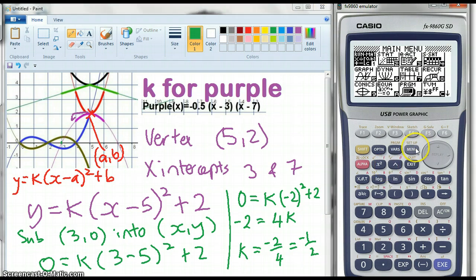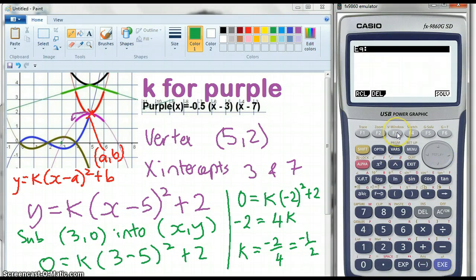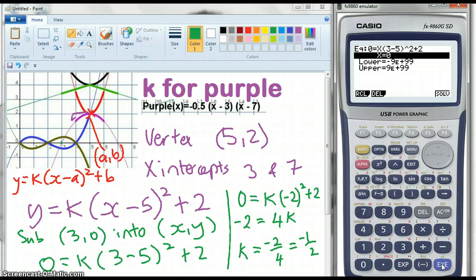Then you go to equation, then you go to solver, and then you write 0 equals, I have to find my equal sign, shift equals, k, which I'm going to call x, and then I've got 3 minus 5 squared plus 2. Execute. Execute again, negative 0.5.